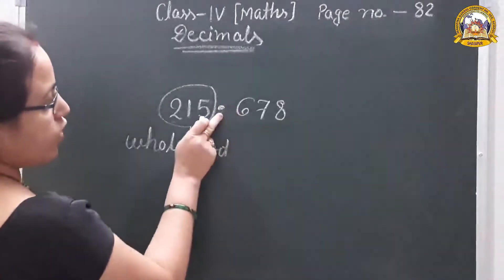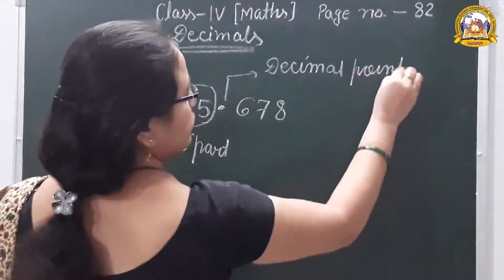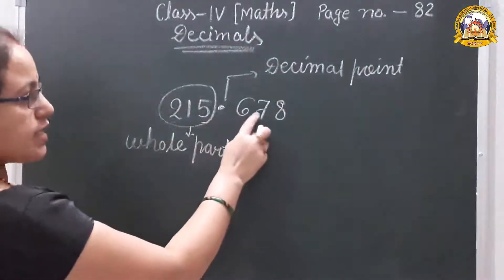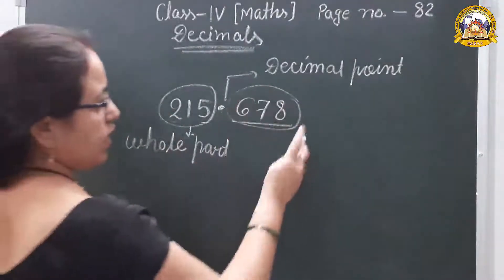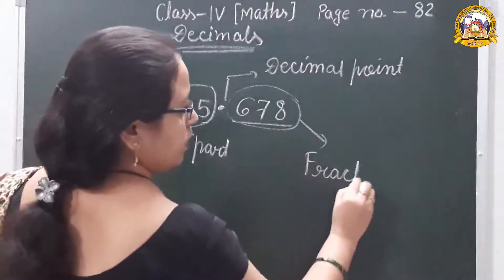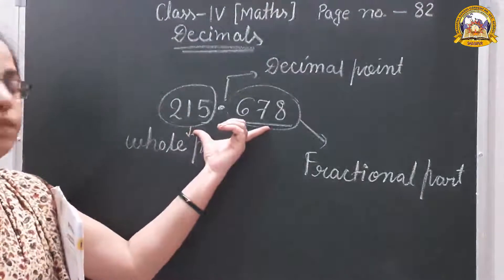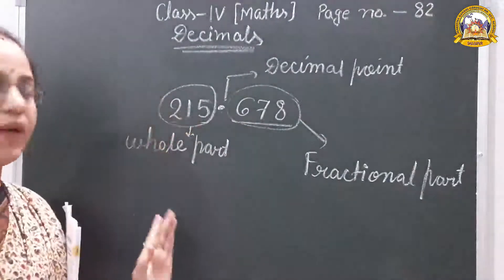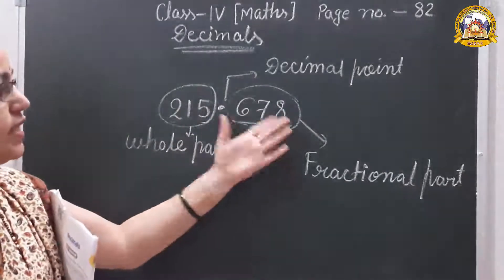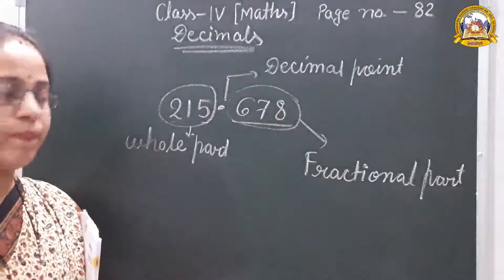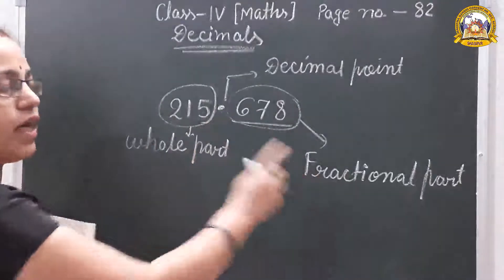Then there is this point — the decimal point. And after the decimal, we have 678. Three digits are there after the decimal, and that part is called the fractional part. So a decimal number has three parts: the whole part, the decimal point, and the fractional part.